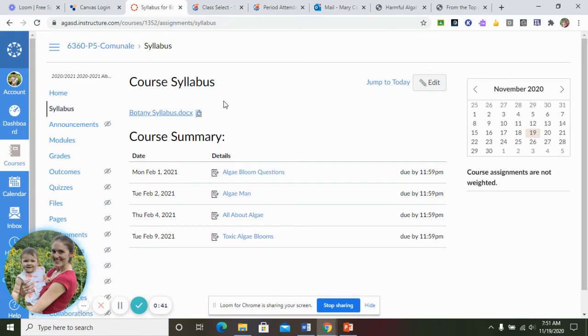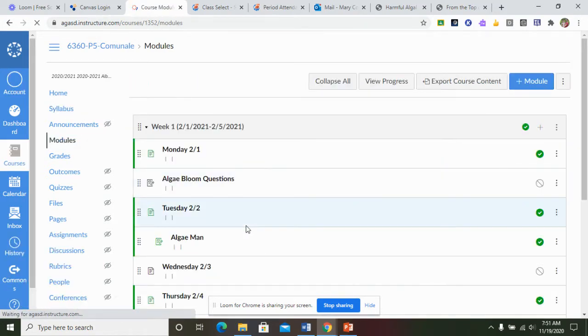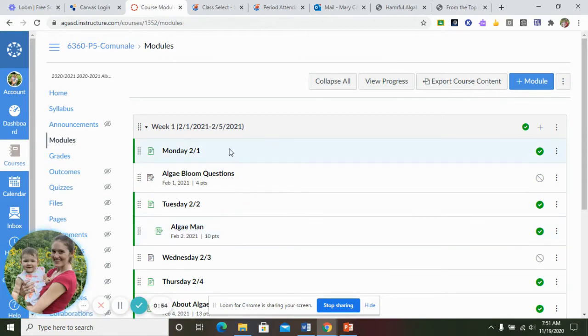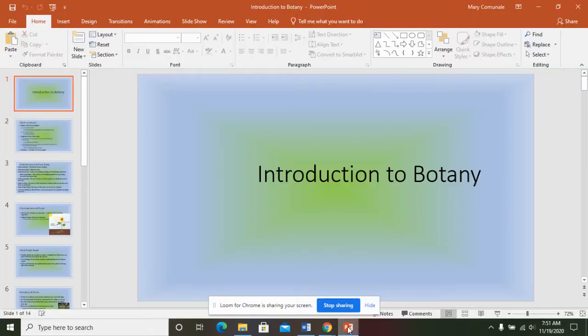I also state in the syllabus that again you do not get a science credit for this class, it is just an elective course. If you go down to modules today we're going to do a little intro. So I'm going to go through just basics about what is botany and we're going to start talking about algae today.